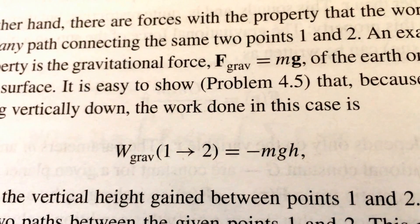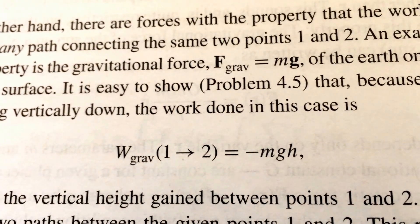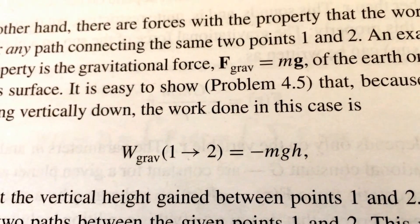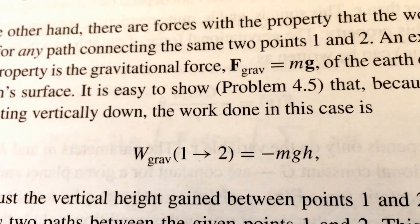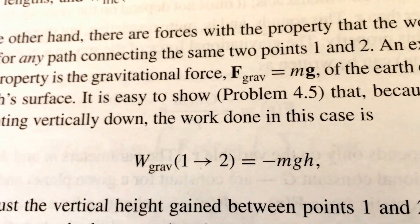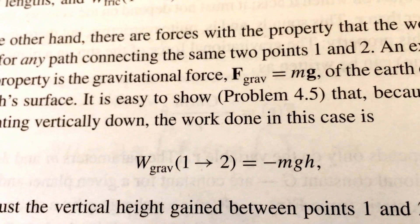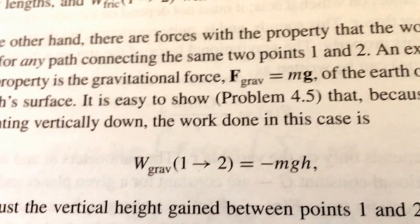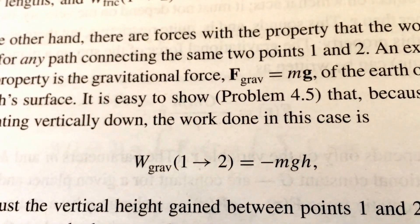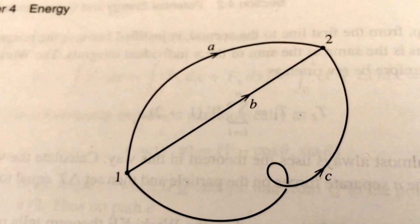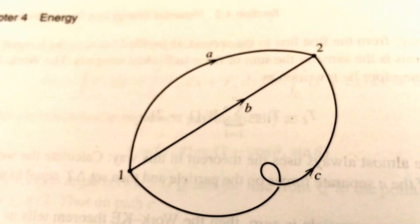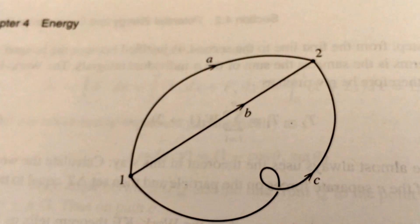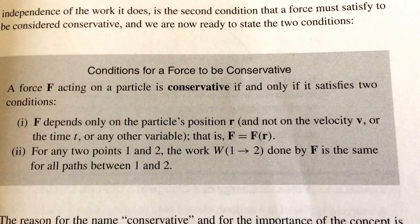By contrast, the work done by a conservative force only depends upon the difference between point 1 and point 2. For the force of gravity near the surface of the Earth, the work done is proportional to H, the difference in height between point 1 and point 2. It doesn't matter how long a path you took. So if point 1 and point 2 represent two different heights above the surface of the Earth, all three different trajectories result in the same work done by gravity.